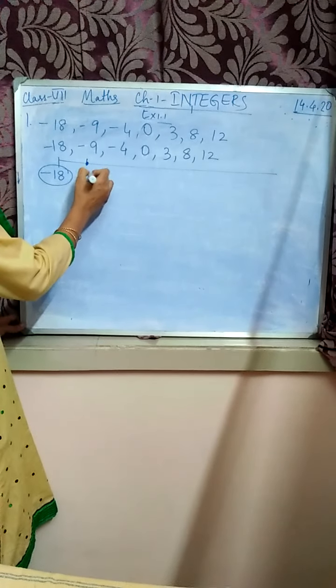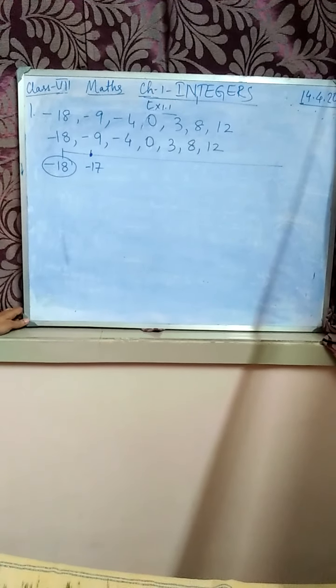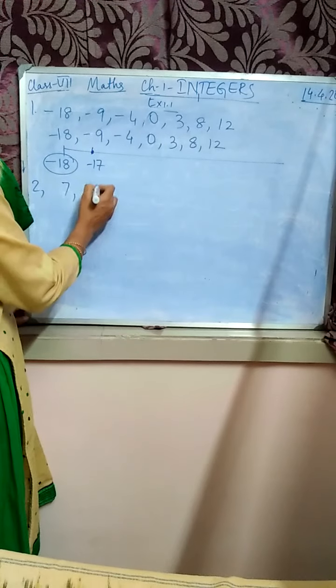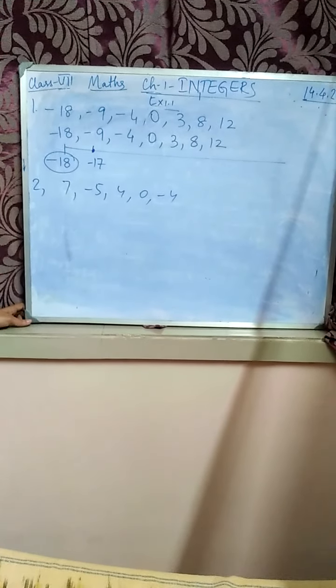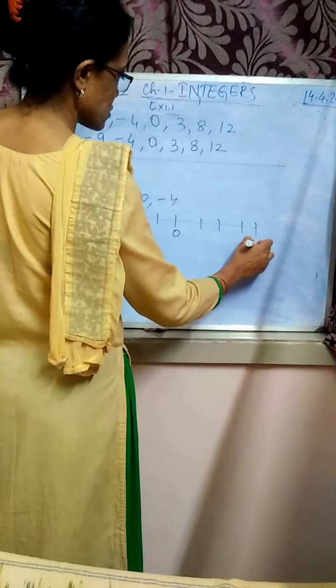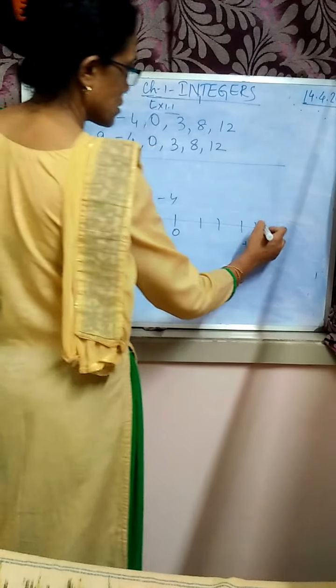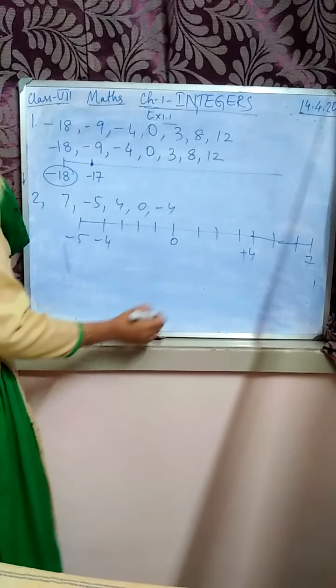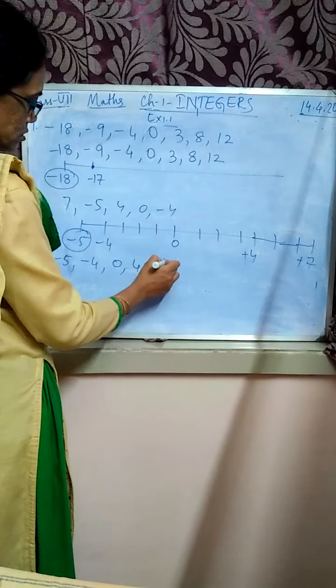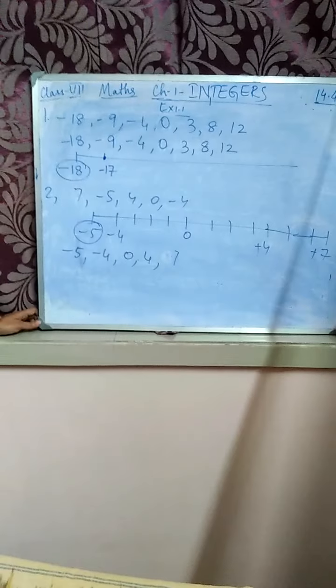Few dots have been marked on the number line — write the appropriate integer for each dot. The previous dot is minus 17, so you can do that at home. Question number 2: arrange 7, minus 5, 4, 0, and minus 4 in ascending order. Marking them on the number line: minus 5 is the lowest, then minus 4, 0, 4, 7. So the ascending order is: minus 5, minus 4, 0, 4, 7.